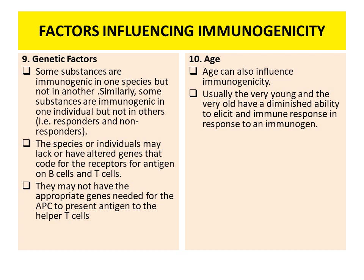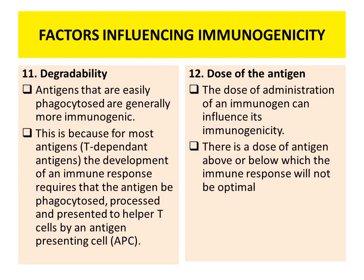Next is age. Age also influences the immunogenicity — the younger and the older individuals have less ability to elicit an immune response to an immunogen or antigen. Then is degradability. Antigens which are easily phagocytosed are generally more immunogenic. This is because for most T-dependent antigens, the development of an immune response requires that the antigen be phagocytosed, processed, and presented to T helper cells by antigen-presenting cells.